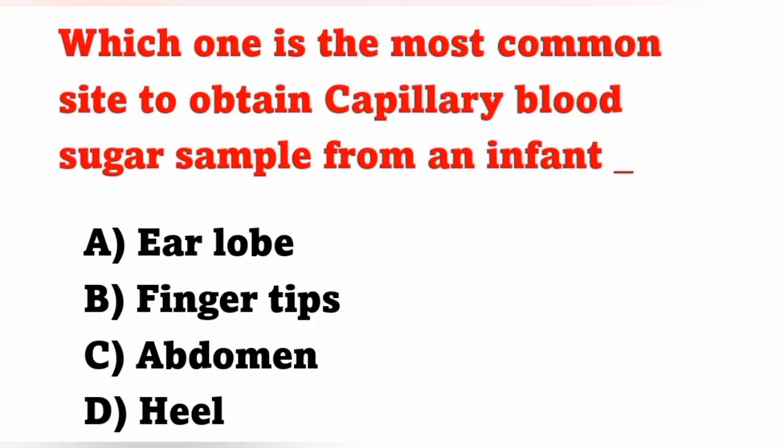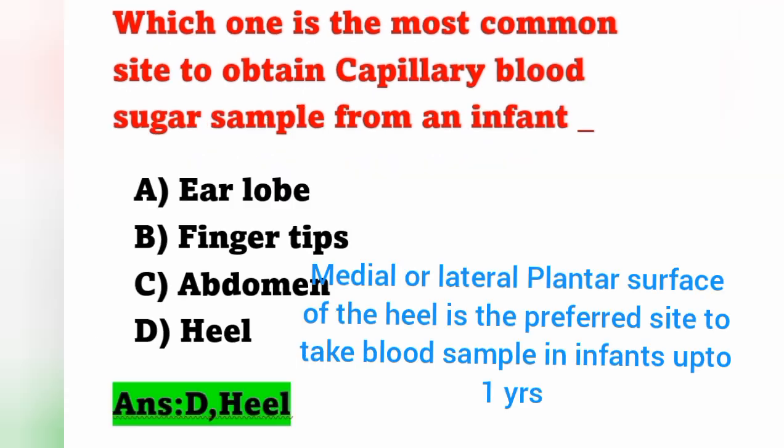Which one is the most common site to obtain a capillary blood sugar sample from an infant? Option A: earlobe, option B: fingertips, option C: abdomen, option D: heel. The most common site is the heel of the foot — option D is the correct answer. The medial or lateral plantar surface of the heel is the preferred site for infants up to 1 year of age.